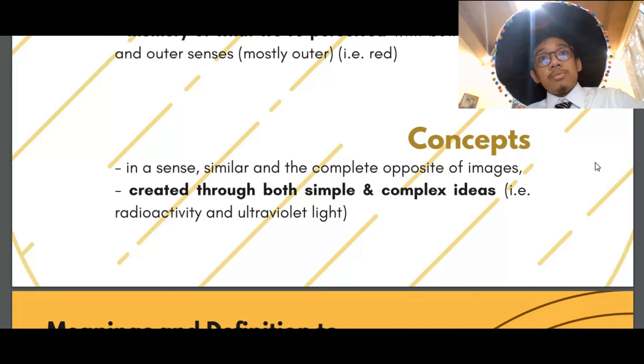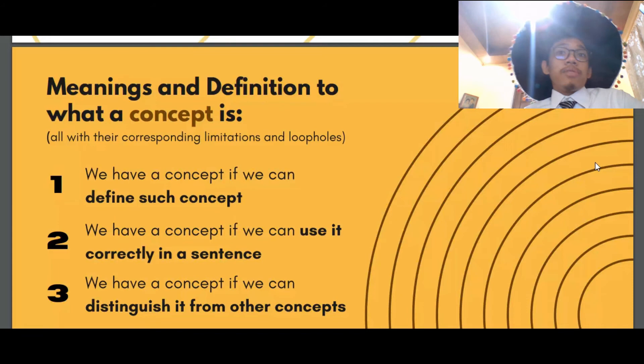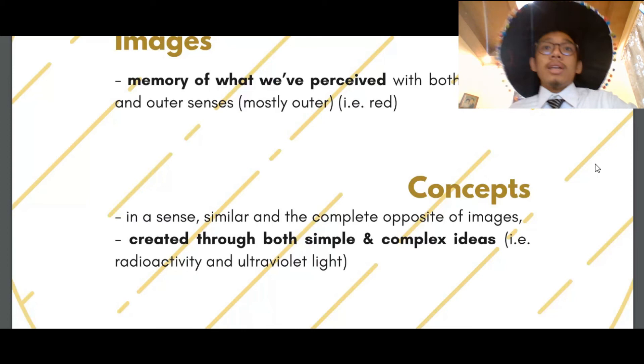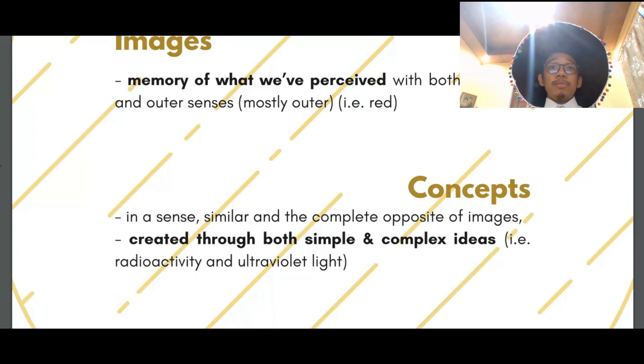An example of a concept that is outside the grasp of our senses is ultraviolet light. Ultraviolet light is not an emotion. Therefore, it's not in the grasp of our inner senses. Also, ultraviolet light is not within the grasp of our outer senses because ultraviolet light is outside the visible light spectrum. Whereas we cannot see ultraviolet light, yet we clearly have a concept with regards to what ultraviolet light is.